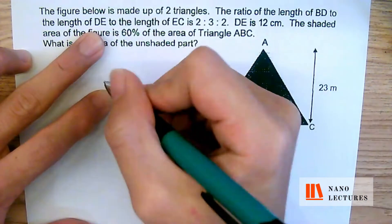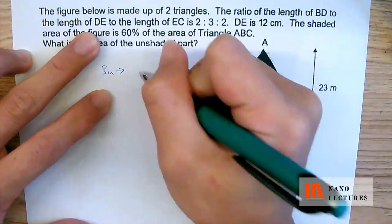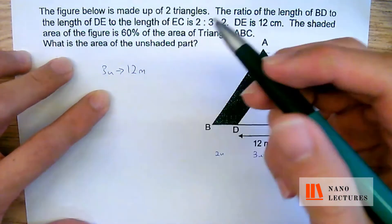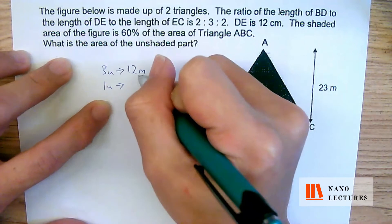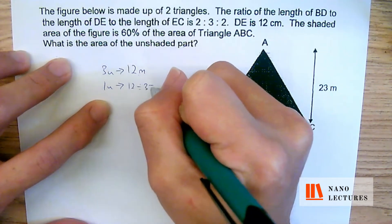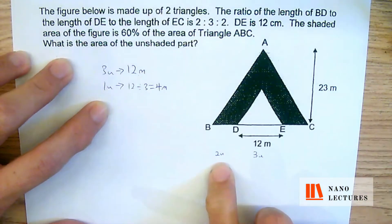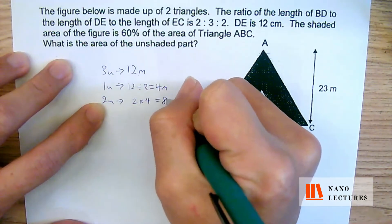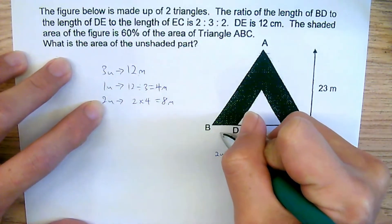Since 3 units represents 12 meters, oh they are using meters not centimeters, so be careful of the units. Therefore 1 unit will be 12 divided by 3 and that will give us 4 meters. And therefore your 2 units will be 2 multiplied by 4, giving us 8 meters. So this will be 8 meters.